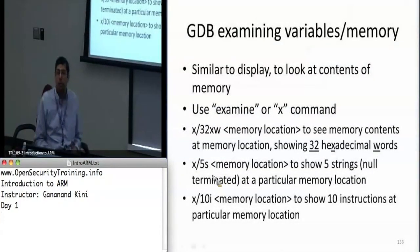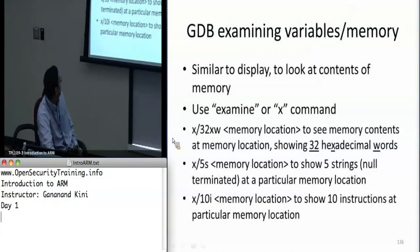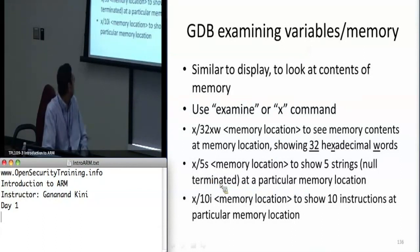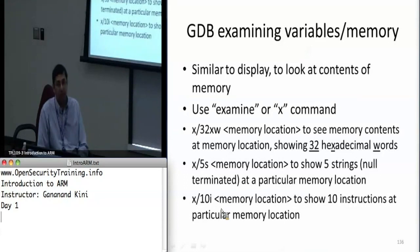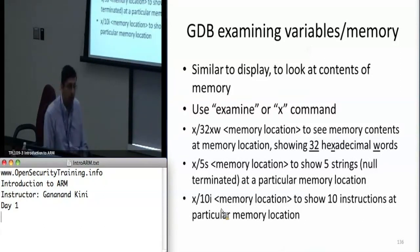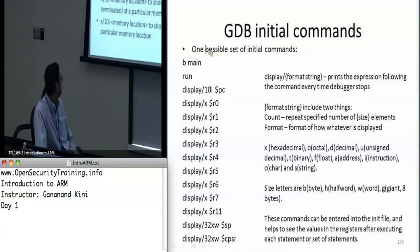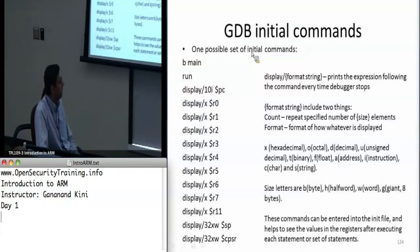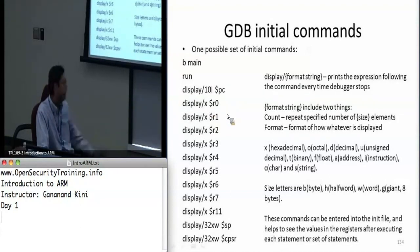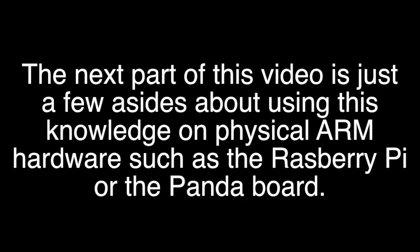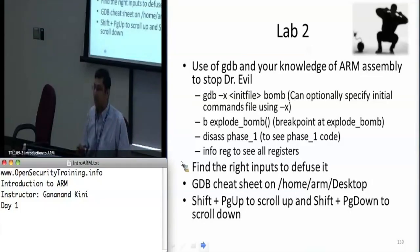Another way to format your examine output: '32xw' means show 32 hexadecimal words starting at a memory location. Similarly '/5s' shows five strings at that memory location, and '/10i' shows 10 instructions. If you're looking at instruction memory and want to decode opcodes at a particular address, '/10i' is pretty useful. In the initial commands convenience file you can use 'display' so it always displays 10 instructions every time you step.